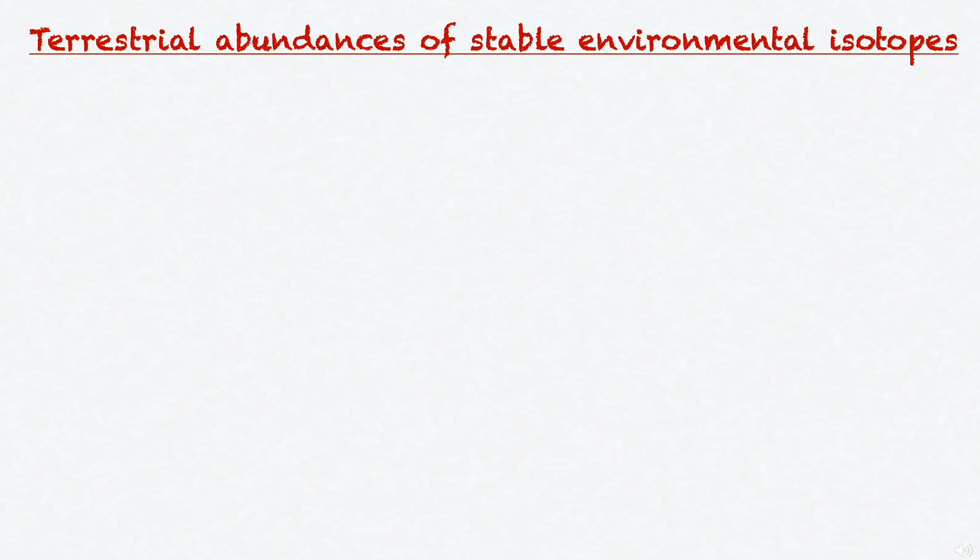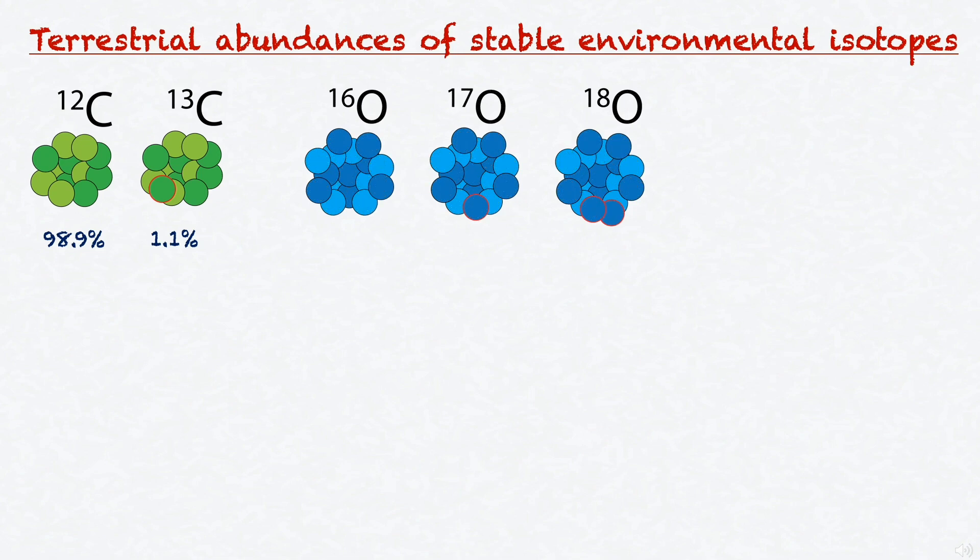First, we know the terrestrial abundances of each of these stable isotopes. Carbon has two stable isotopes of interest: carbon-13, the heavier one, with a terrestrial abundance of 1.1%, and carbon-12, the lighter one, with a terrestrial abundance of 98.9%. Likewise, oxygen has three stable isotopes of interest. The heavier one, oxygen-18, with an abundance of 0.204%, the intermediate, oxygen-17, with an abundance of 0.037%, and the lighter one, oxygen-16, with an abundance of 99.796%.